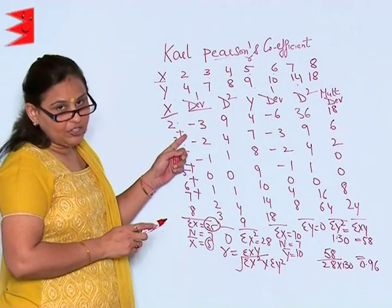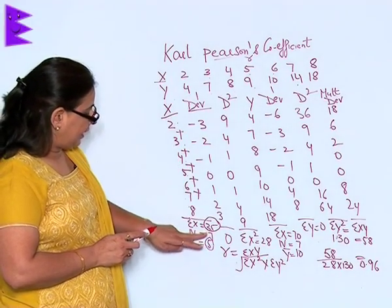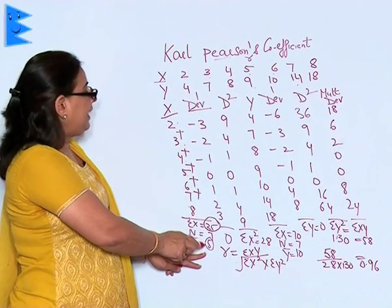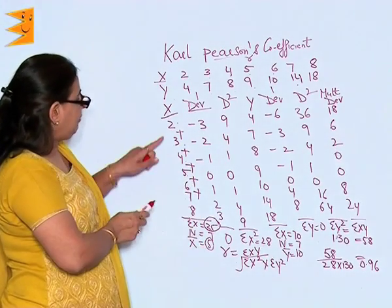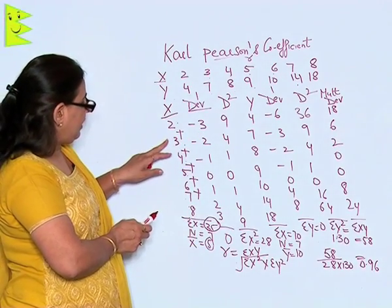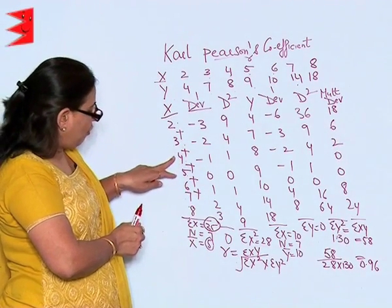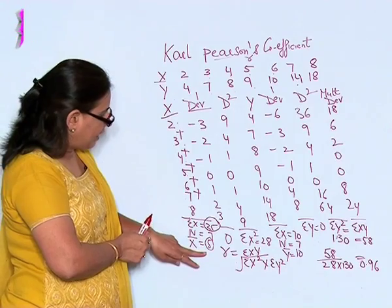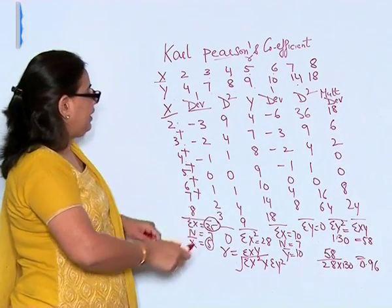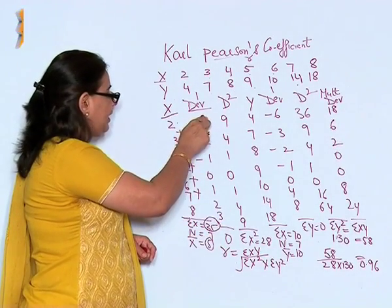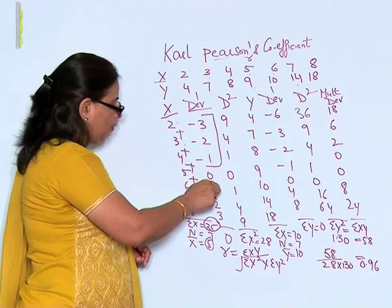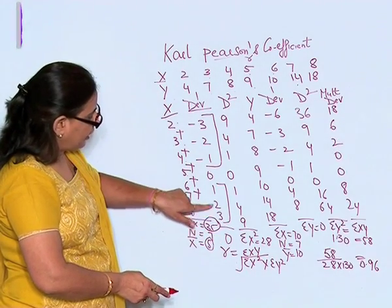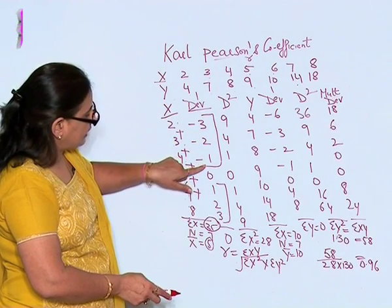Now I will draw the deviation. Sigma X is 35, number of observations is 7, and X-bar is 5. The deviations are: 2 minus 5 gives minus 3, 3 minus 5 is minus 2, 4 minus 5 is minus 1, 5 minus 5 is 0, 6 minus 5 is 1, 7 minus 5 is 2, and 8 minus 5 is 3. The sum of deviations should always be 0 — the negatives (3 plus 2 plus 1) equal the positives (1 plus 2 plus 3), confirming the deviation sum is 0.